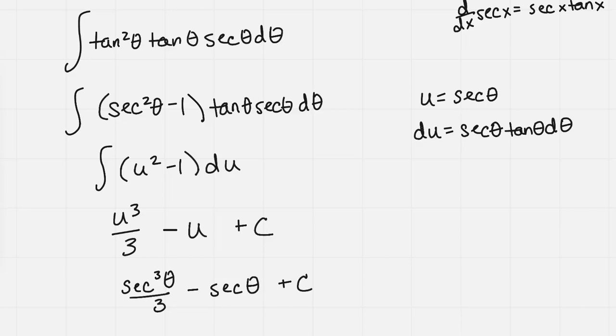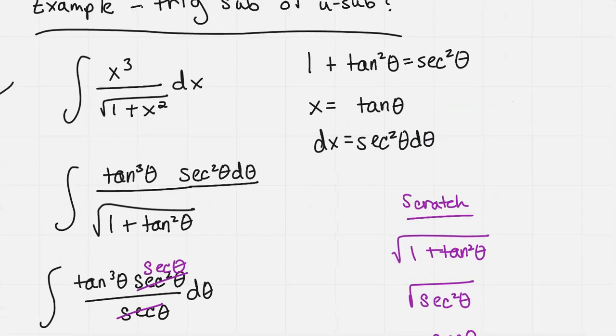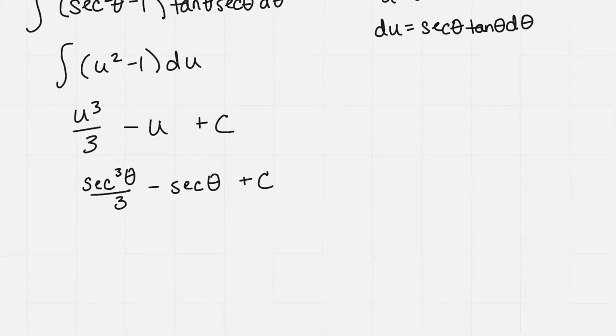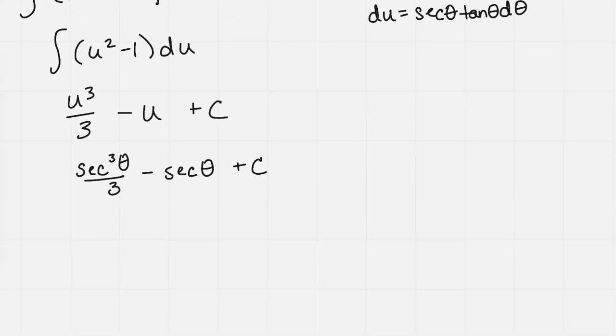But that secant theta, I'm not done yet because my original substitution was x equals tan theta. So x equals tan theta implies that theta equals the inverse tangent of x over 1. You can picture this x as over 1, and we have the inverse tangent to undo what's happening to the theta.